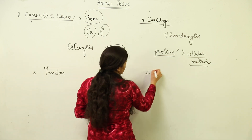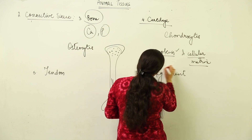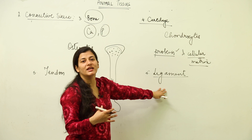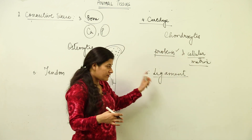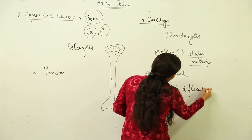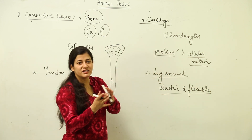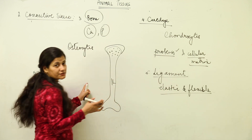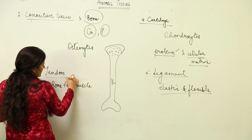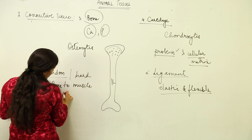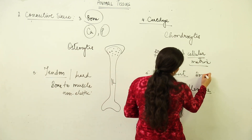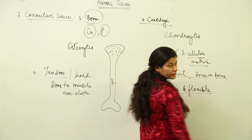The next two types of connective tissue are tendon and ligament. Ligament is the connective tissue that establishes a connection between bone and bone. It is elastic and flexible, present at the junction of two bones so that flexibility can be maintained. Tendon, on the other hand, connects bone to muscle — it is hard, non-elastic, and very strong.